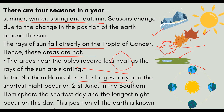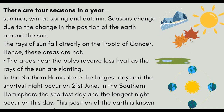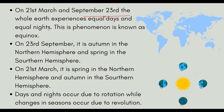The longest day and shortest night occur on 21st June. On 22nd December, it is the winter solstice in the southern hemisphere. On 21st March and 23rd September, there are equal days and equal nights.